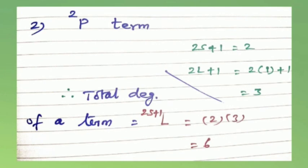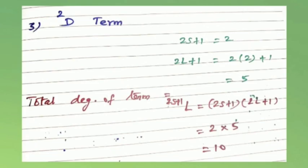For the ²P term: 2S+1=2, L=1 so 2L+1=3. Total degeneracy = 2×3 = 6. For the ²D term: 2S+1=2, L=2 so 2L+1=5. Total degeneracy = 2×5 = 10. Thank you friends.